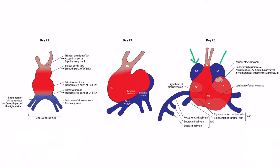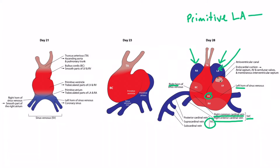Notice that the atria are now behind the ventricles, and we can also see many new vessels beginning to form. The sinus venosus still has a right horn and a left horn, and now we can see the formation of several cardinal veins. The right common cardinal vein and the right anterior cardinal vein will become the superior vena cava, or SVC. The posterior cardinal vein, supracardinal vein, and subcardinal vein will become the inferior vena cava, or IVC. Later in development, the primitive pulmonary vein is formed from the posterior aspect of the primitive left atrium, which is later absorbed into the wall of the left atrium and becomes the smooth part of the left atrium.